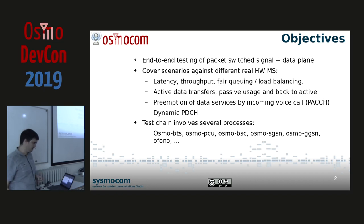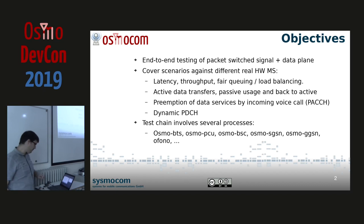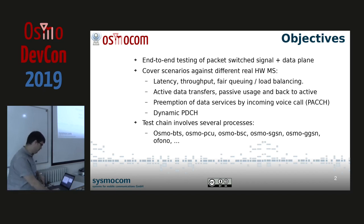Some other interesting stuff about this project is being able to test specific hardware, like NanoBTS. We support dynamic PDCH channel there, switching from PDCH to TCH channels, which allows us to check if we had any regression with any change. This kind of testing involves lots of different projects like OsmoBTS, OsmoPCU, and whatever else — lots of stuff involved.